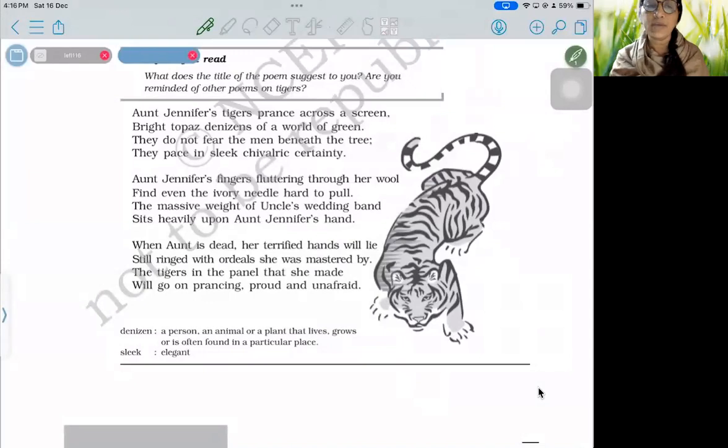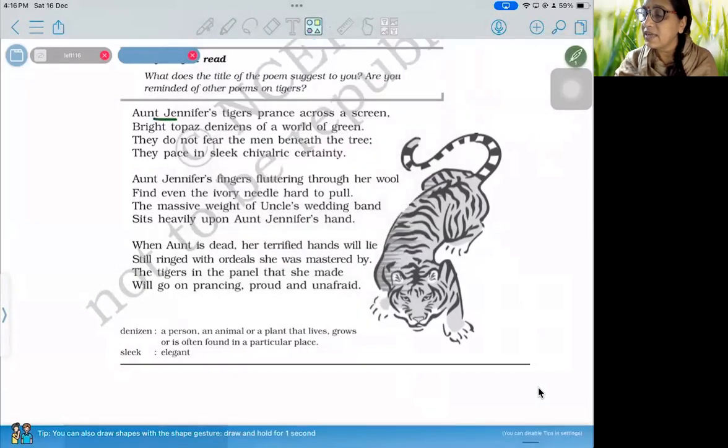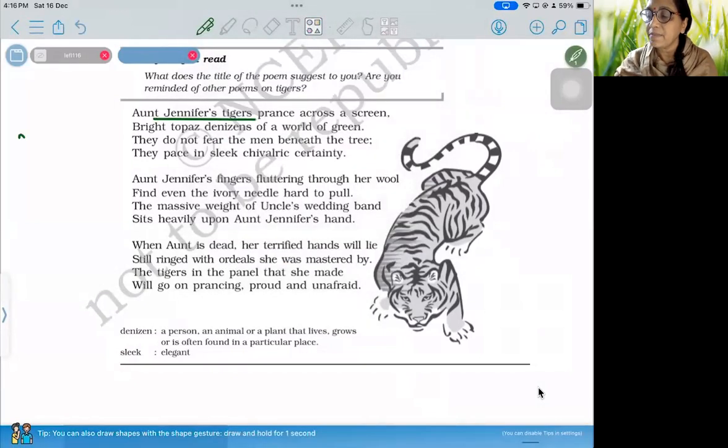You can see that the poem is written in three paragraphs. Aunt Jennifer's tigers prance across a screen. Here, Aunt Jennifer's tigers are the tigers that she has made on an embroidery panel. She has woven it with embroidery, and they are prancing, meaning they are jumping.